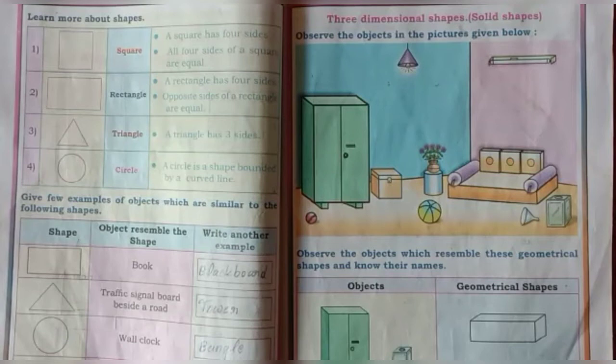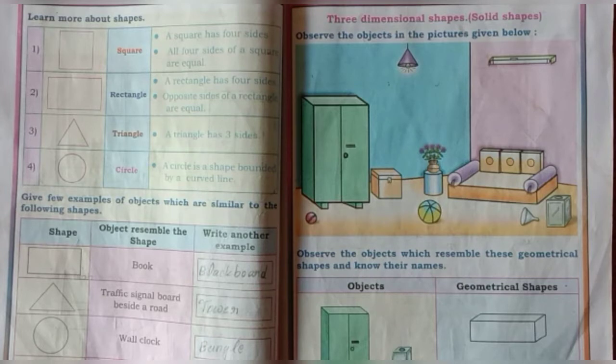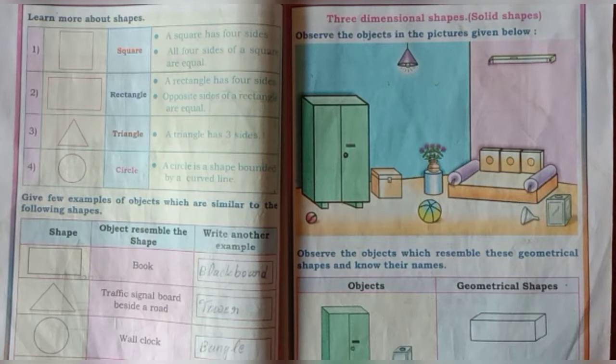Hi children, today in our class we are going to learn about three dimensional shapes or solid shapes. Three dimensional shapes means objects that occupy space are called three dimensional or solid shapes.